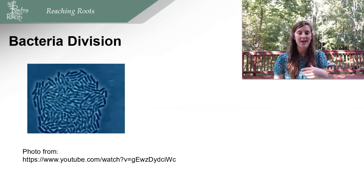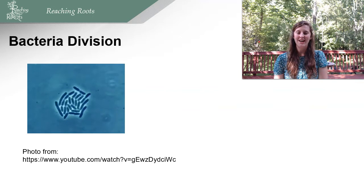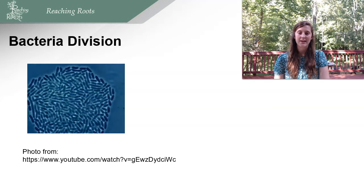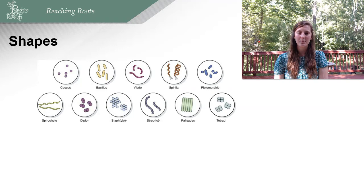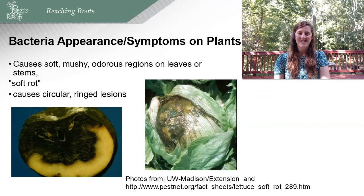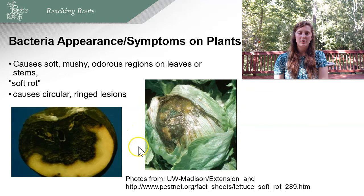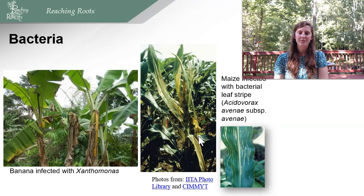Bacteria are single cells but work together in groups to form diseases — and along with fungi, bacteria can also be beneficial. Bacteria can cause nasty diseases on plants such as soft, mushy, odorous rot of leaves or stems, soft rot of potato, circular ring lesions, and slimy growth on lettuce. Specifically, Xanthomonas can cause a really bad bacterial infection in bananas. Corn or maize infected with bacterial leaf stripe is another important plant disease.